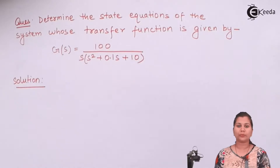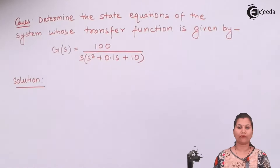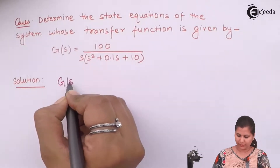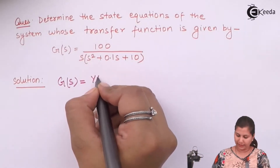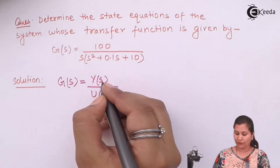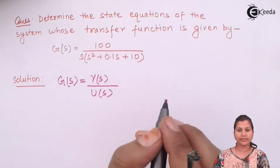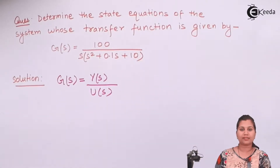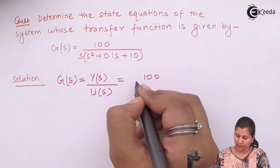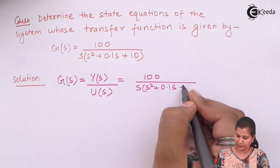We are given the transfer function. We know that the transfer function is the ratio of the Laplace transform of the output and the input. So G(S) equals Y(S) upon U(S), that is the ratio of the Laplace transform of output and input under the condition that all initial conditions are zero. This is given equal to 100 upon S times (S² + 0.1S + 10).